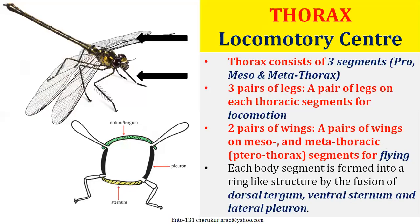The second tagmata is the thoracic region. Whenever you catch an insect, you will see three pairs of legs, one pair located in each thoracic segment. There are two pairs of wings located in the second and third thoracic region, which we call the pterothorax. The thoracic region has two pairs of wings and three pairs of legs useful for locomotion — flying, walking, jumping, and crawling — so it is called the locomotory center.